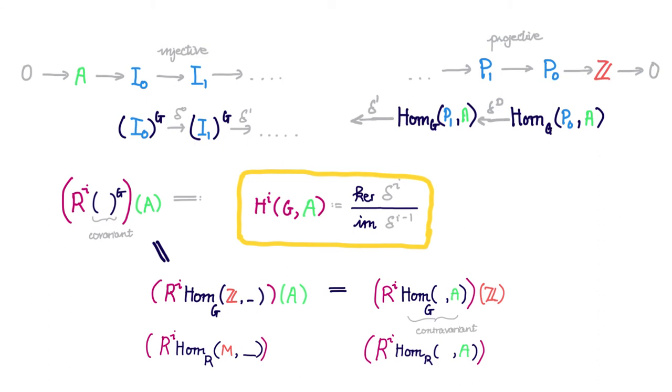Both of these are left exact, and since the category of R modules have enough projectives and injectives, we can take their right-derived functors. The right-derived functors have the following symmetric relationship.